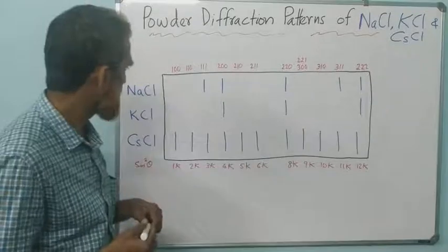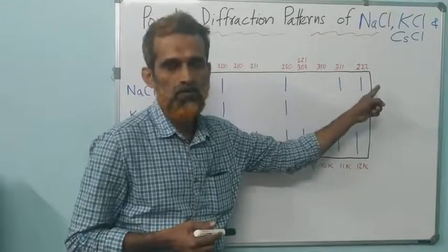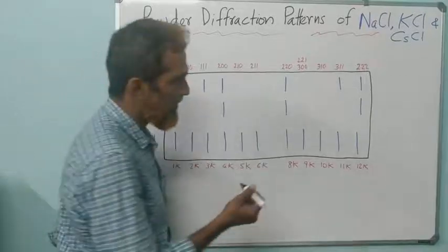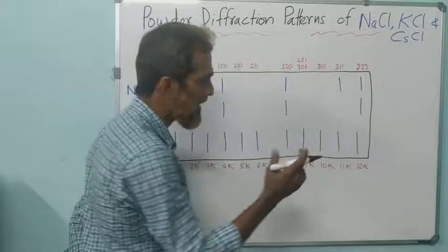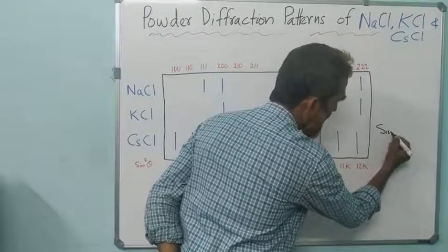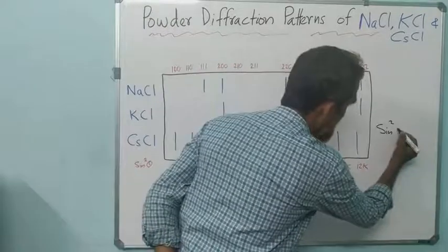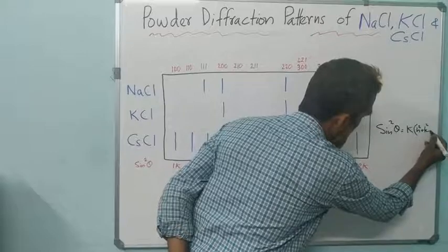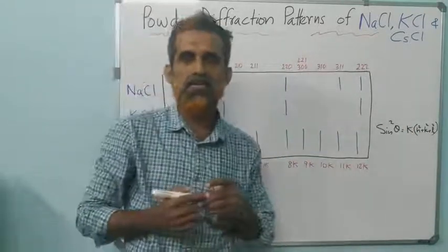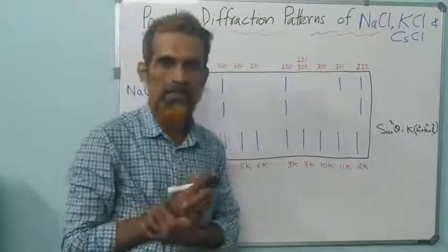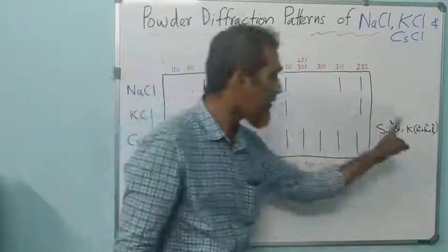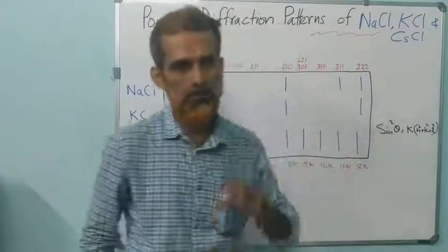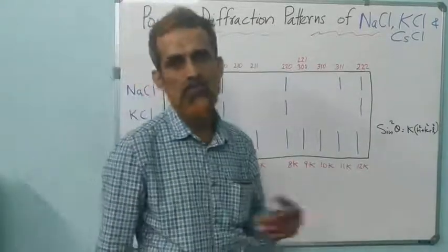So let us first take sodium chloride. This is the powder diffraction pattern obtained for sodium chloride — see where the reflection lines are seen. From Bragg's equation we can derive an equation used for the analysis of powder diffraction patterns, that is sin²θ = k(h² + k² + l²). To predict the reflection pattern, you give all possible values for hkl, the Miller indices, and get the sin²θ values for various planes.